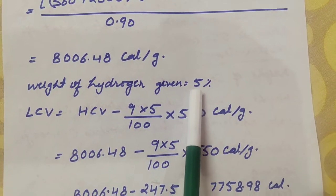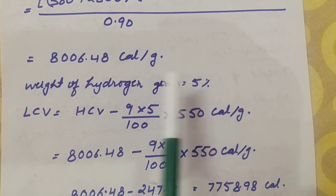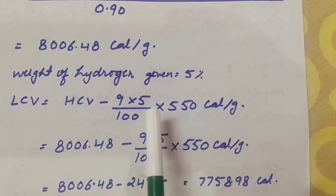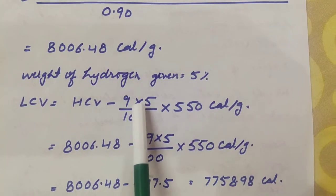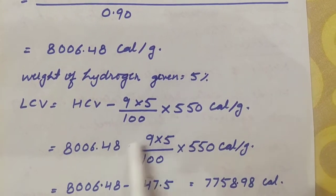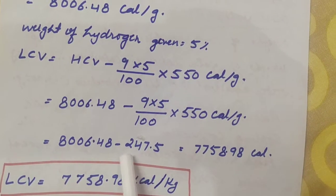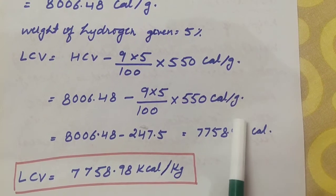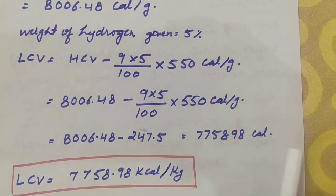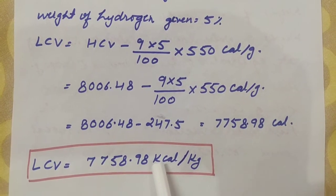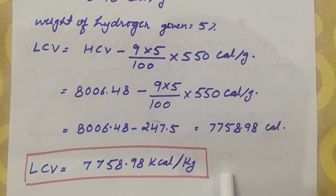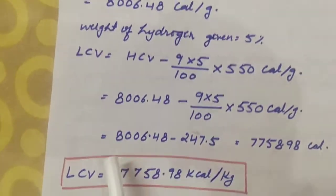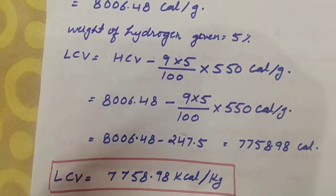The weight of hydrogen given is 5%. To calculate the lower calorific value, the formula is: LCV = HCV − 0.09 × (H% / 100) × 587. Substituting: 0.09 × (5/100) gives 247.5 calories per gram. Subtracting this from the HCV, we get the lower calorific value. Converting to kilocalories per kilogram, the answer is 7758.98 kilocalorie per kilogram.